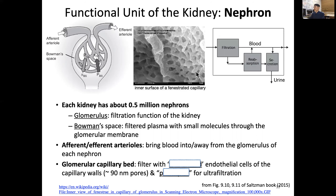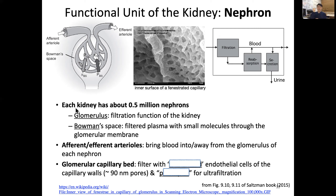After filtration, the kidney further processes what will become urine. Water and vital ions will be reclaimed through reabsorption back into the blood, and what we don't need will be secreted into the urine. Each kidney has about half a million nephrons, so both kidneys together have about one million nephrons.